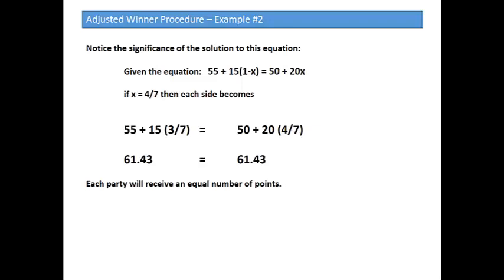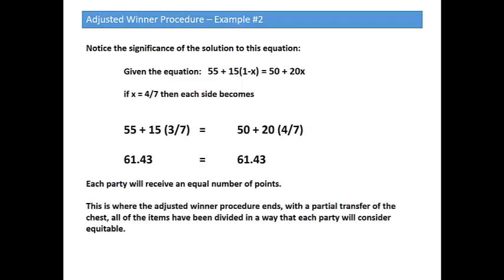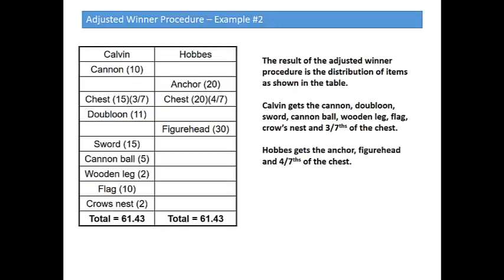This is where the adjusted winner procedure ends. With the partial transfer of the chest, all items have been divided in a way that each party will consider equitable. Here's our final solution: Calvin gets the cannon, the doubloon, the sword, the cannonball, the wooden leg, the flag, the crow's nest, and 3 sevenths of the chest. Hobbes gets the anchor, the figurehead, and 4 sevenths of the chest. Both parties walk away feeling the distribution was fair because both are walking away with 61.43 points. The goal of the adjusted winner procedure is an equal number of points — not an equal number of physical items.